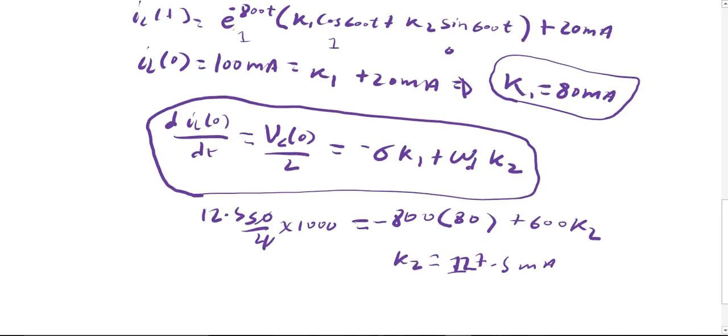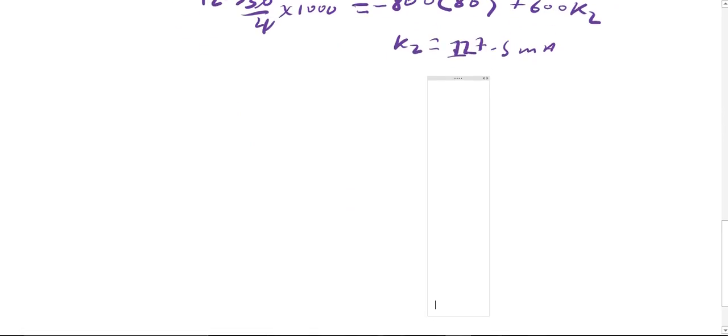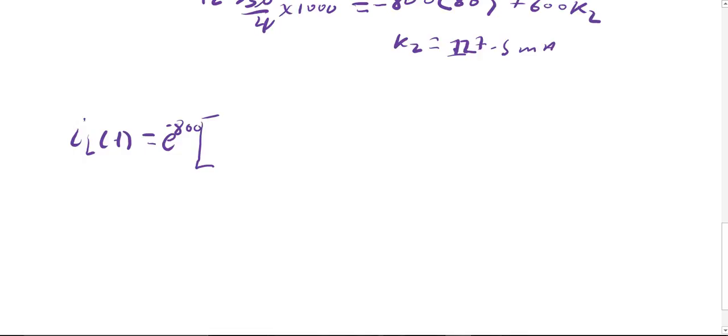So after this you have both of your values, so you just write equation for IL of t. So IL of t equals to e to the negative 800t, 80 which is k1, cosine of 600t plus 127.5 sine of 600t plus 20. This whole thing is in mA and this is for t greater than or equal to 0, and you're done.